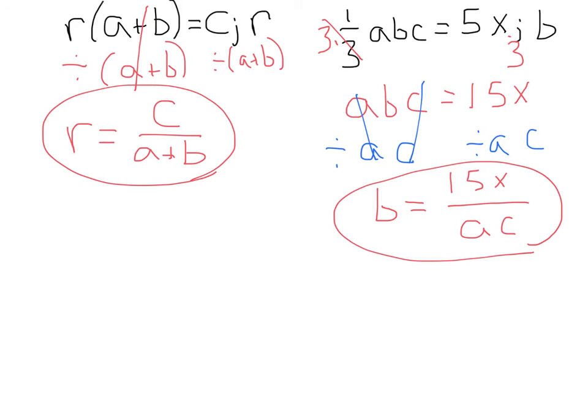So while these types of solving for a specified variable can seem a little bit more tricky, it's really the same thing as solving any other equation. As long as you stick to your inverses, use your properties of equality, use the same rules that you've learned for regular equations, get that variable by itself, you're going to be golden. All right, everybody. Have a great day, and we will continue our adventures of mathematics very soon.